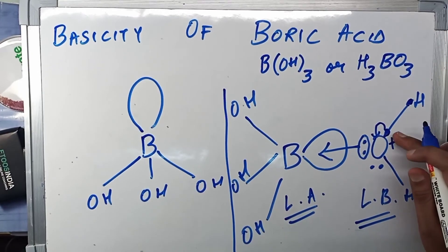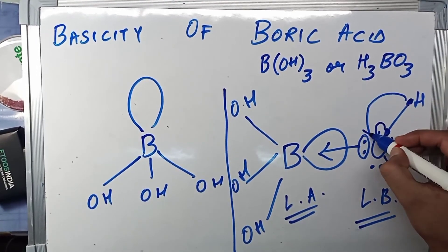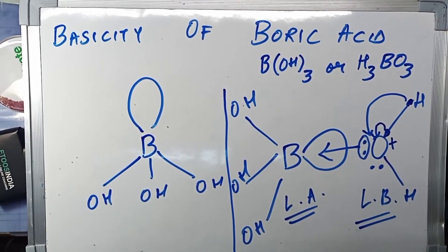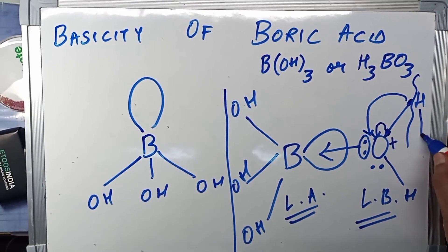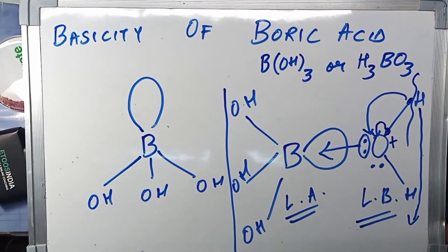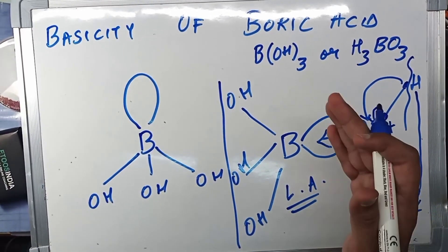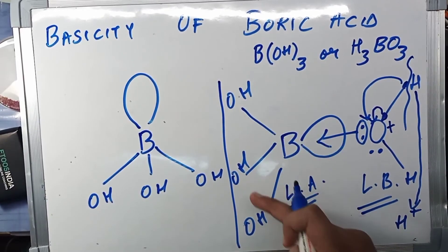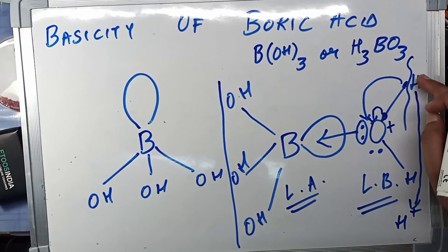So what oxygen does is it keeps its electron—because this was oxygen's itself—and it keeps this one also. It snatches the hydrogen's electron, and this thing breaks off. H⁺ is released. All right.